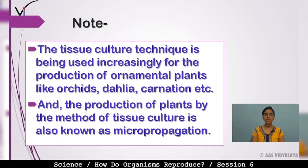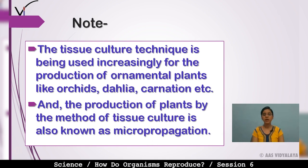The tissue culture technique is being used increasingly for the production of ornamental plants like orchids, dahlia, and carnation. The production of plants by the method of tissue culture is also known as micropropagation, because micro-level tissues are used to form plants and reproduce.